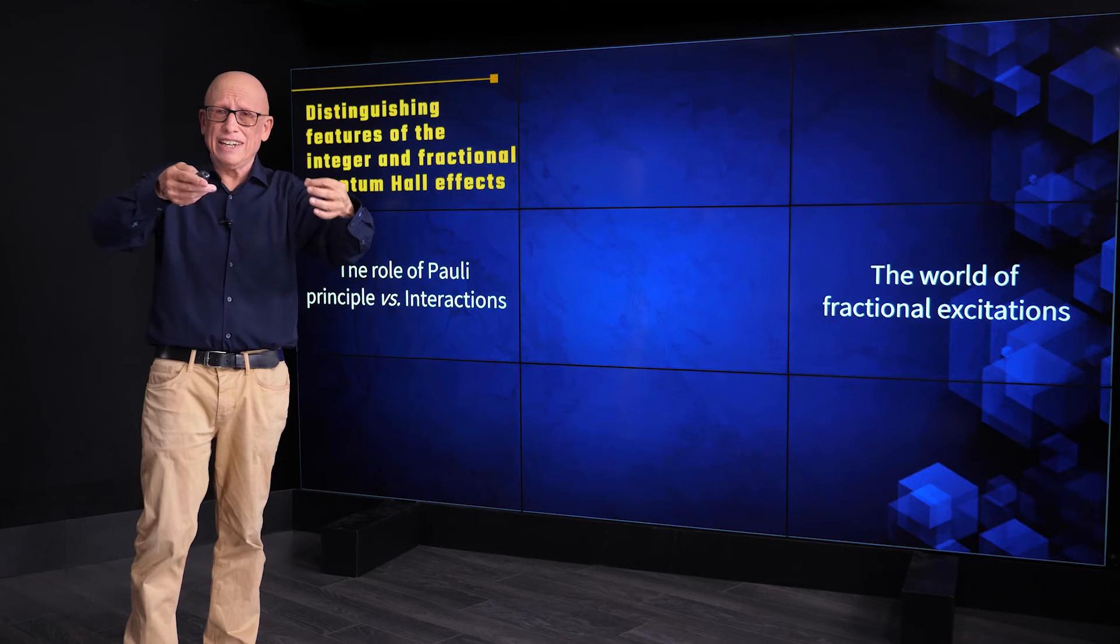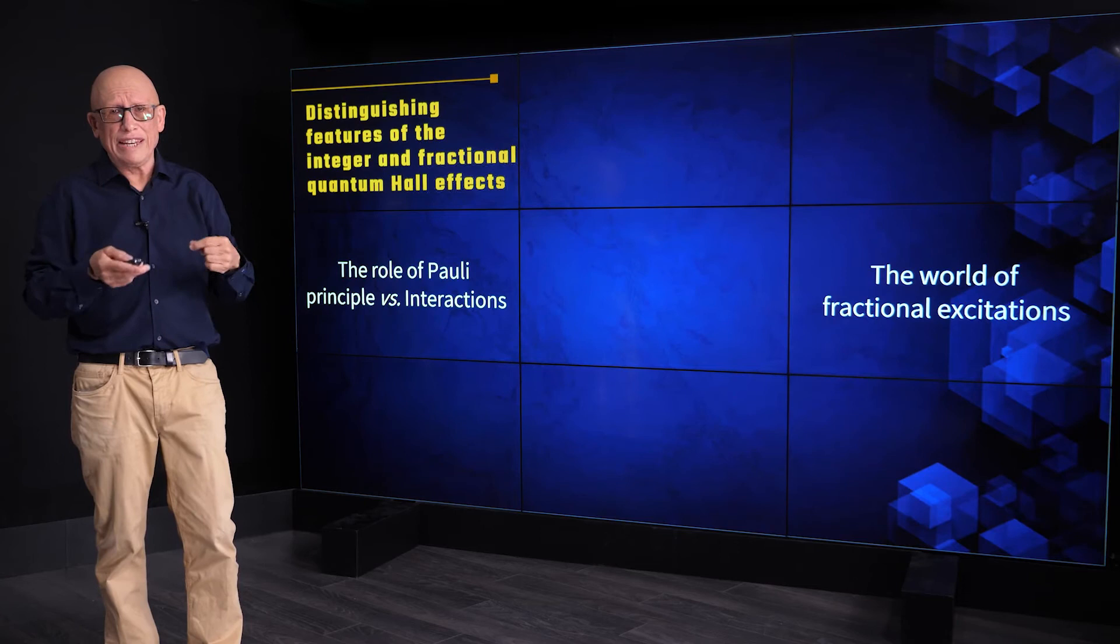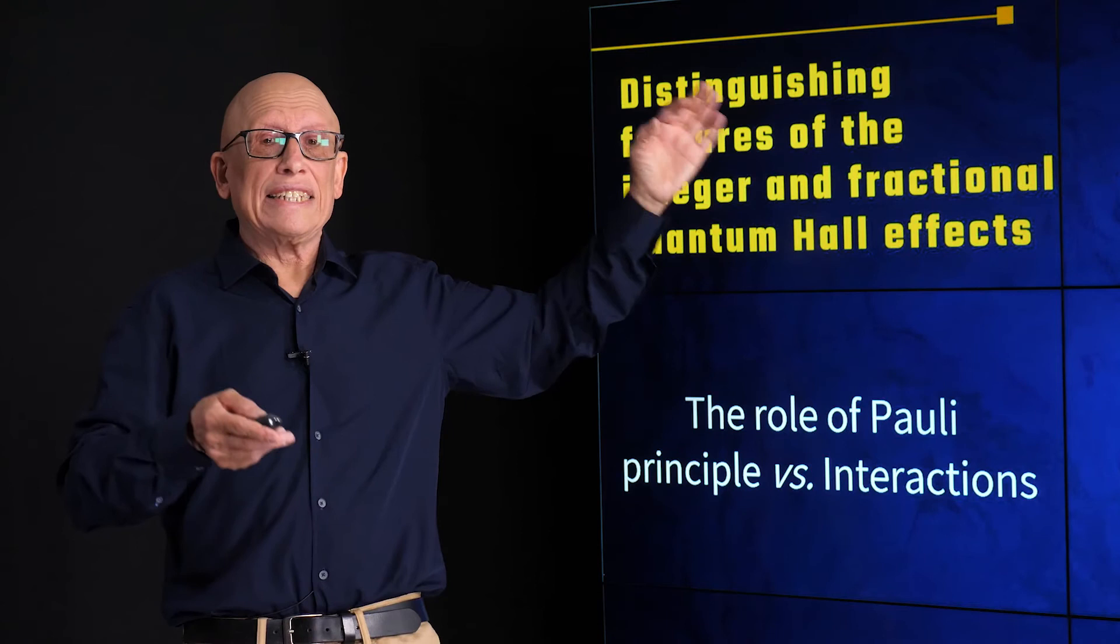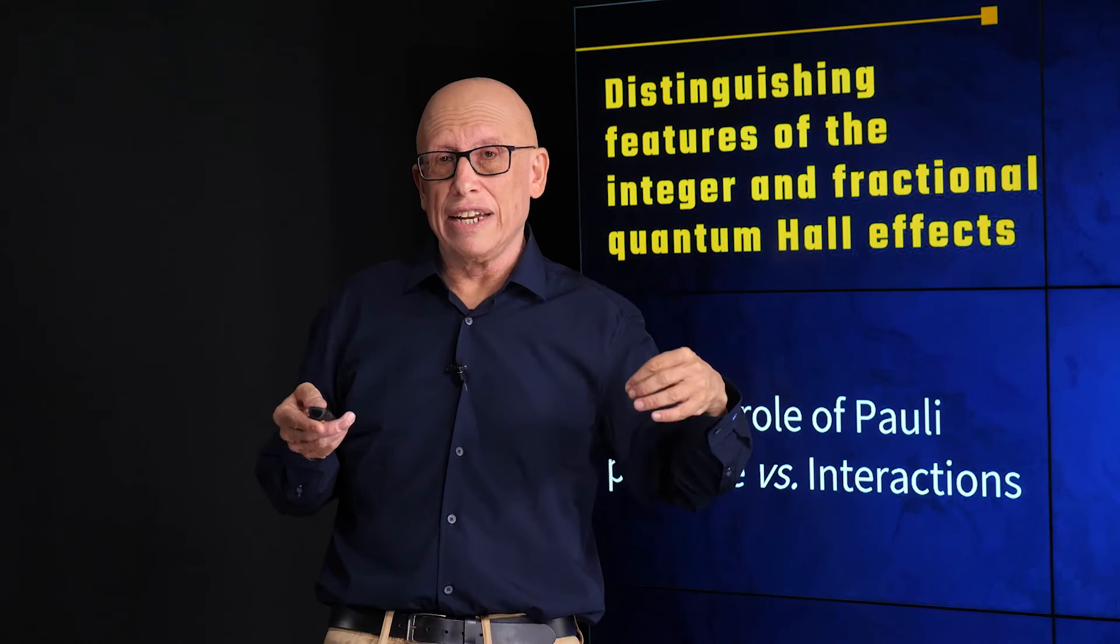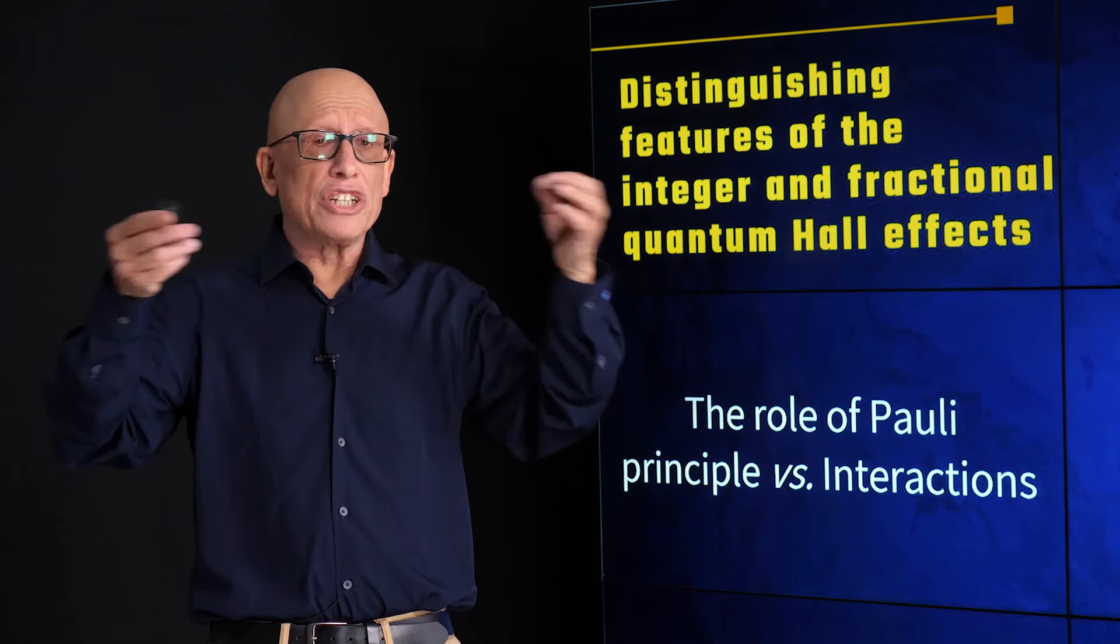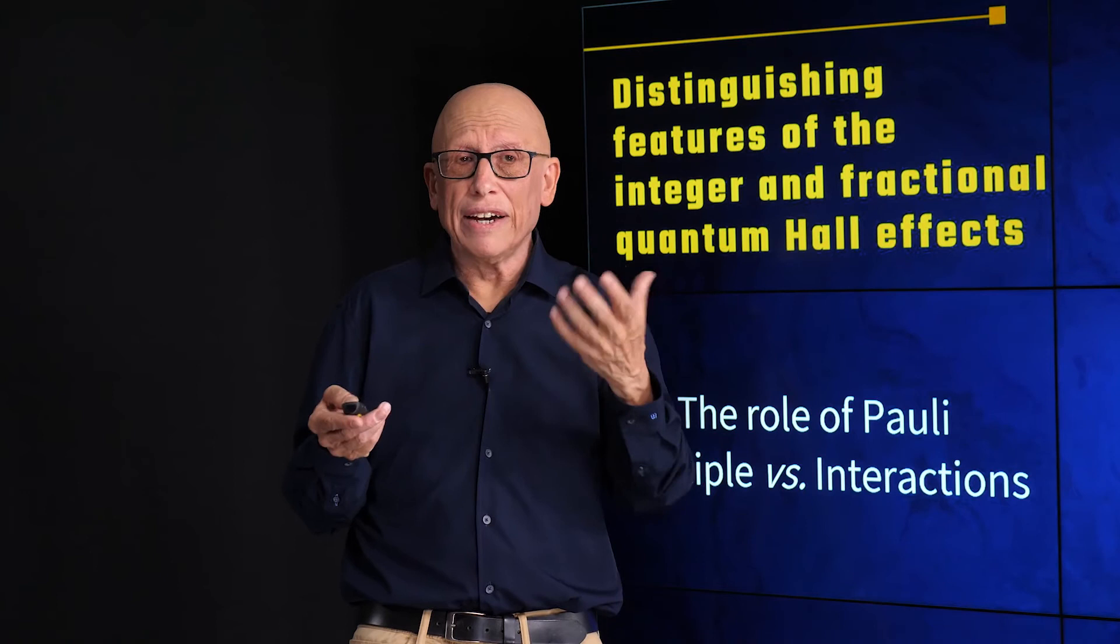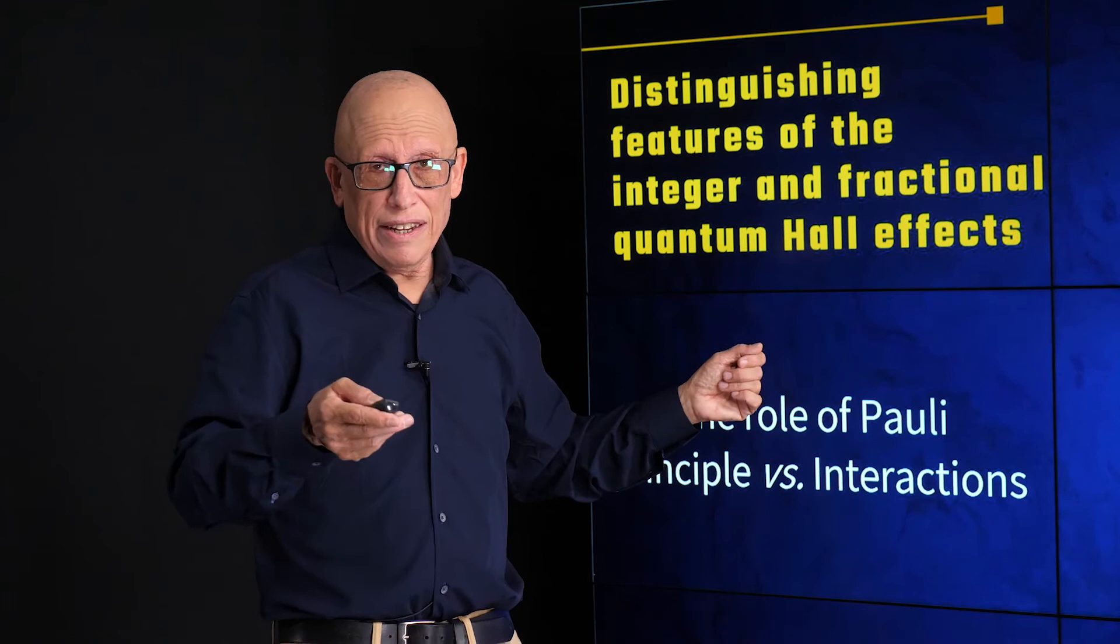The second difference, so beautiful, so much a subject of one of the segments we're going to see later on in this course, is the world of fractional excitations. It is the fact that in the fractional quantum Hall effect, electrons break into quasiparticles whose charge is smaller than the charge of the electron. Those quasiparticles have unique properties, fractional statistics, all kinds of other mind-boggling properties, and we will see those.